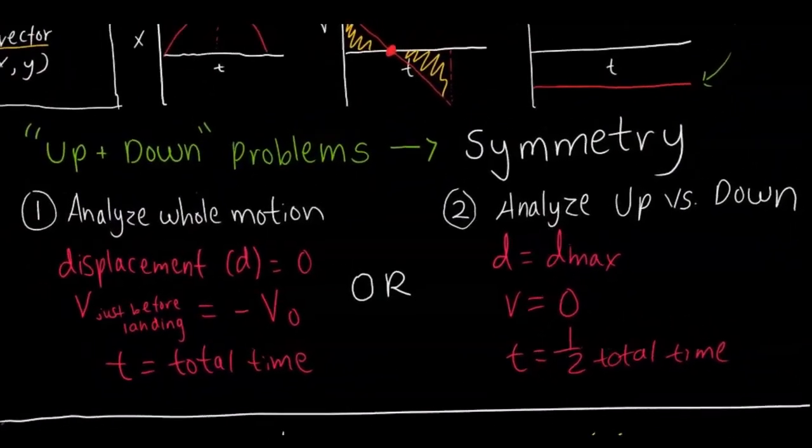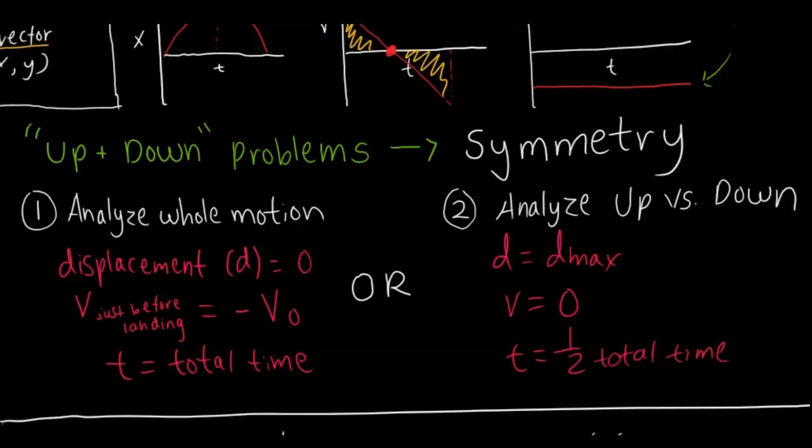The other thing regarding free fall is up and down problems. We already talked about that symmetry that you're going to see, but there are two strategies you want to use when analyzing these problems. You can either analyze the whole motion, in which the displacement would be zero because it came back down. The velocity just before landing is the negative of that initial velocity, and then the time's just the total time it took for the entire motion. Or you can just analyze just the up portion or just the down portion in which the displacement would be max. The velocity would be zero since when it reaches its apex, that would just stop. And then time is just half the time.